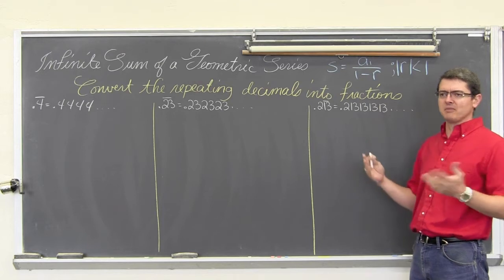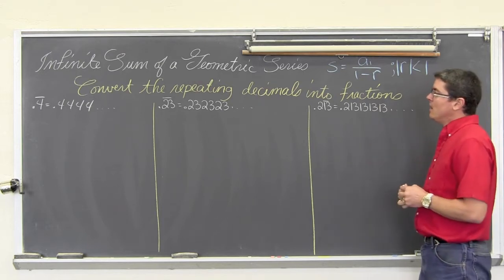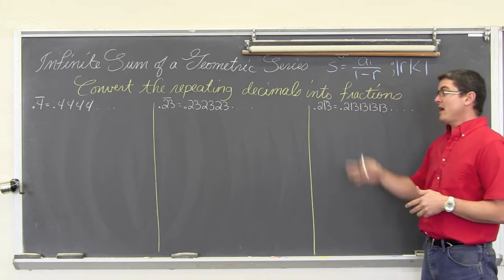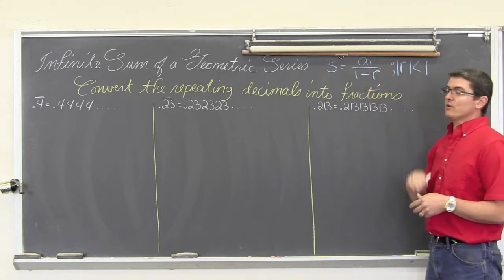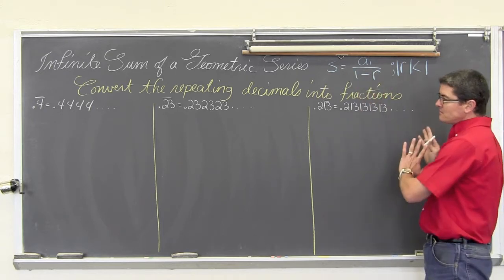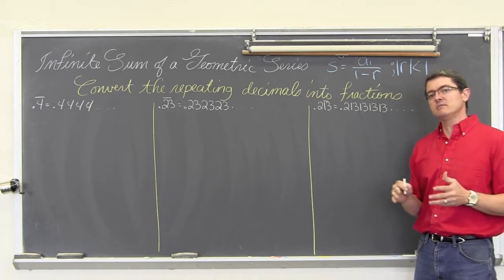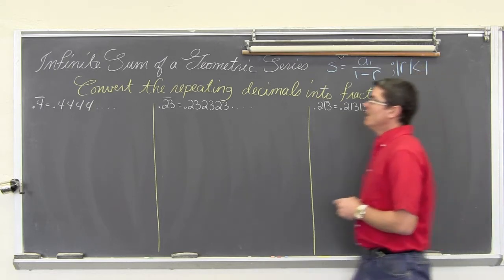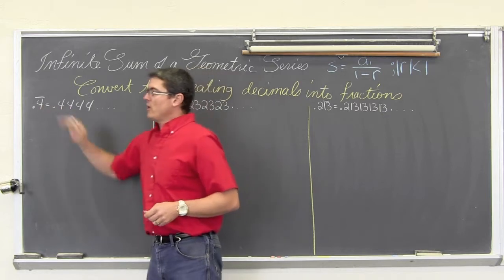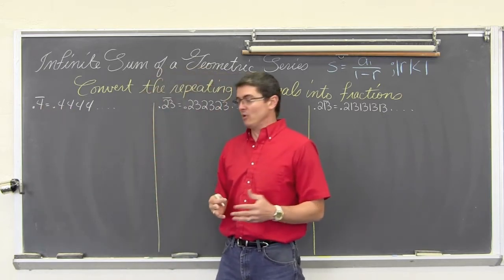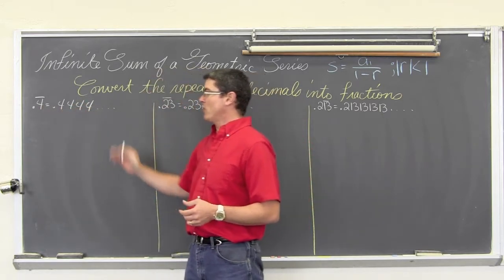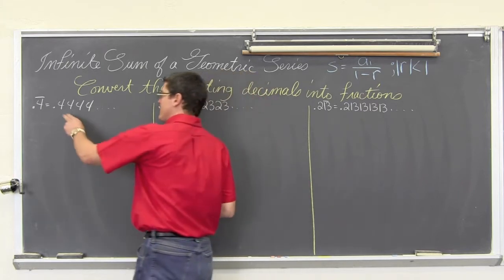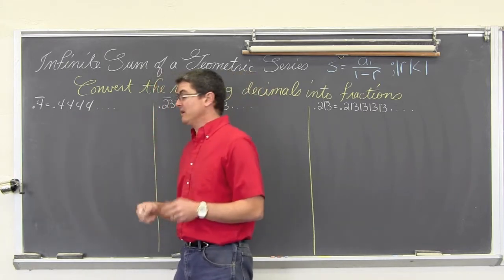I don't know if that is late grade school or middle school, but hopefully now that we understand what a geometric series is and why we are able to find an infinite sum, we can revisit this and make it actually understand why it is working. So we want to convert .4 repeating into a fraction. Well, .4 repeating is .444 and so on.